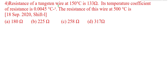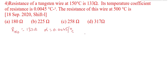Our next question is: resistance of a tungsten wire at 150 degrees is 133 ohm. Its temperature coefficient of resistance alpha is 0.0045 per degree Celsius. What is the resistance of the wire at 500 degrees? He is asking us to calculate the resistance at 500 degrees.